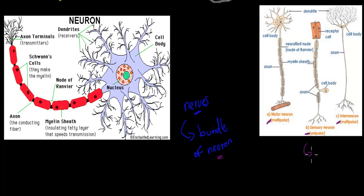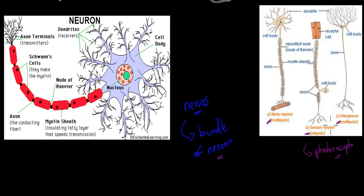Sensory neurons would include, for example, your photoreceptors. Any receptor would be an example of a sensory neuron — sensory means it senses. Receptors detect that change, so they are sensory neurons. Then we've got interneurons. These are the ones that get the message towards different parts of the body. For example, the optic and auditory nerves are made up of interneurons because they have to send that message to the brain.